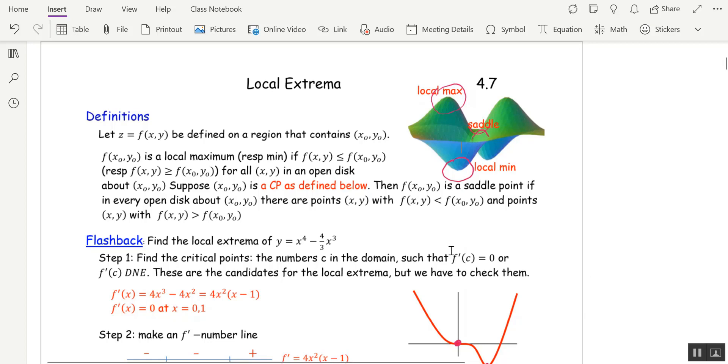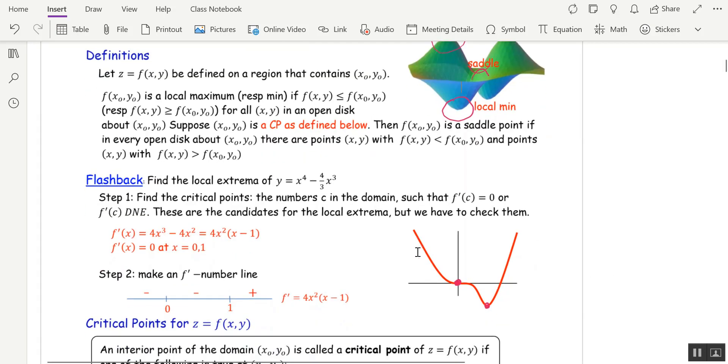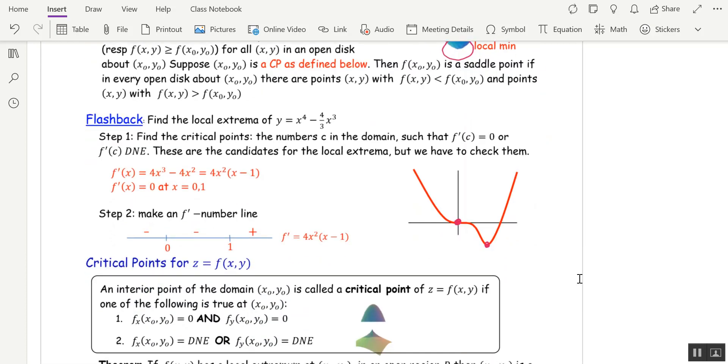Before we jump into that, let's do a flashback to single variable calculus and recall how finding the local extrema worked in that case. So suppose we want to find the local extrema of this function. The first step was to find the critical points. Those were the numbers in the domain where the first derivative was 0 or it didn't exist.